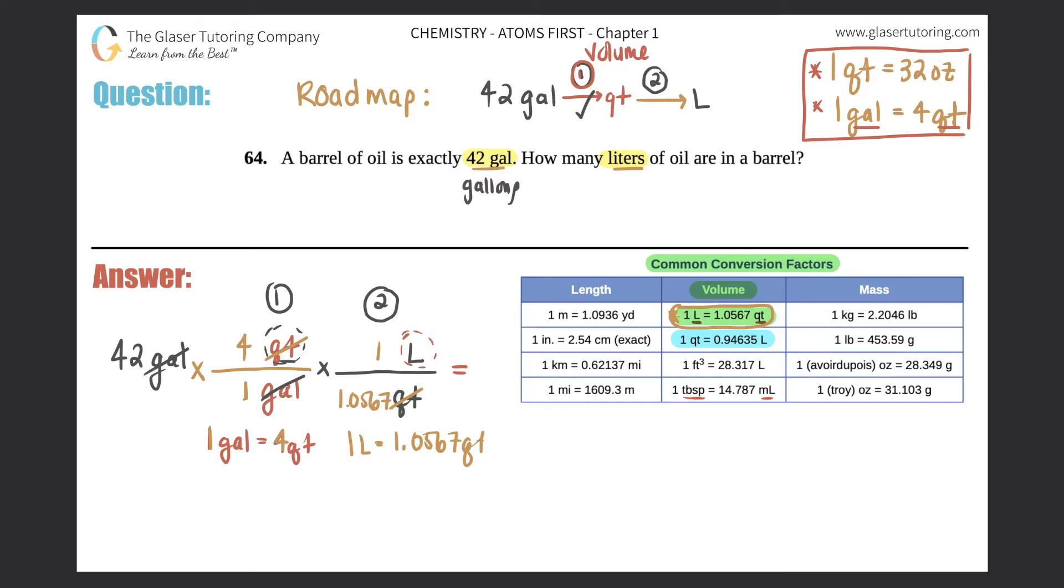Now we just have to do the math. When you're converting, what I like to do is I like to multiply the top to get one number, then multiply the bottom to get one number, and then you finally do your division. So I like to do multiply top, multiply bottom, then you finally divide.